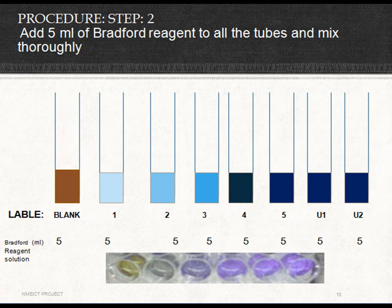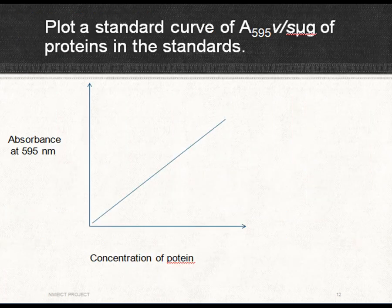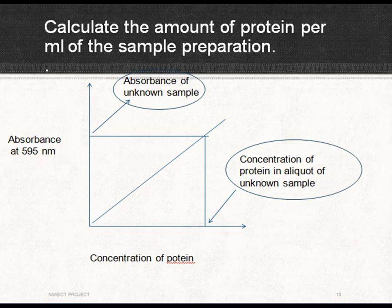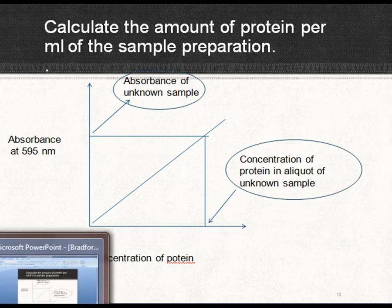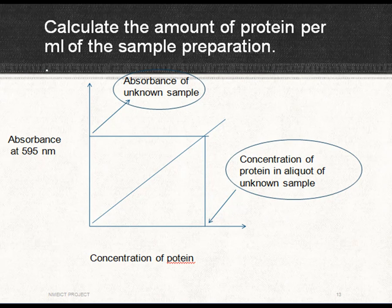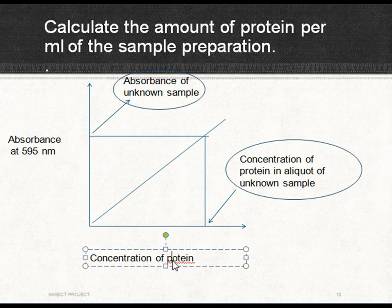After obtaining the absorbance from every tube, plot the standard curve with absorbance on one axis and concentration of protein on the other — you will get a straight line. From this standard curve, estimate the amount of protein in the unknown sample by plotting its absorbance on the graph and finding the corresponding concentration. That is how protein is estimated using the Bradford method. Thank you.